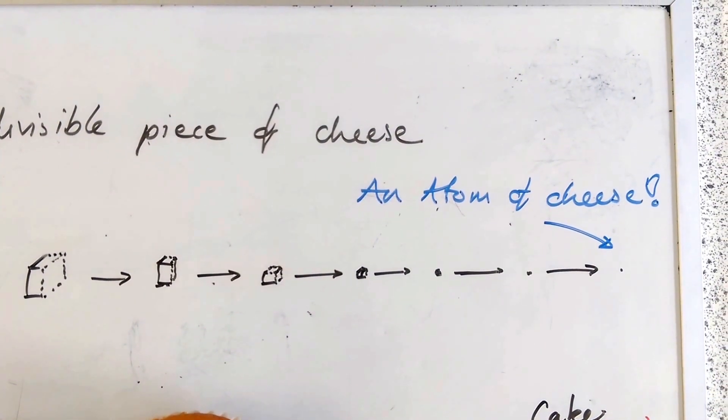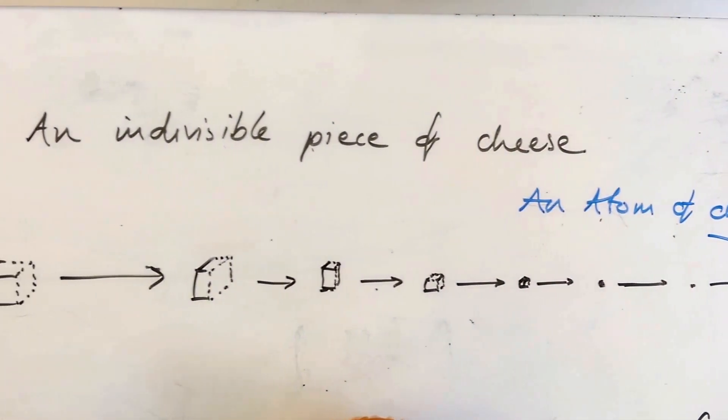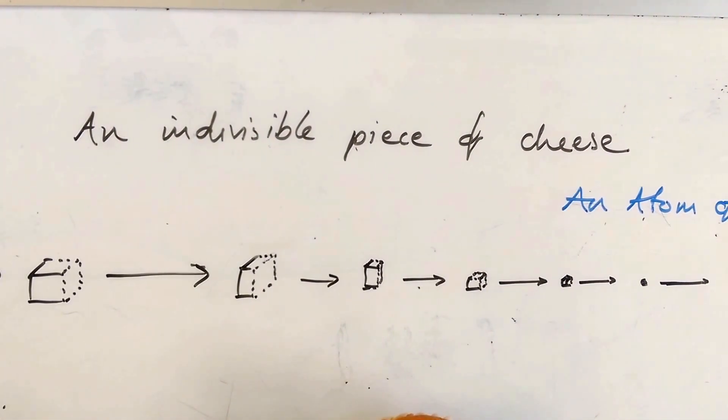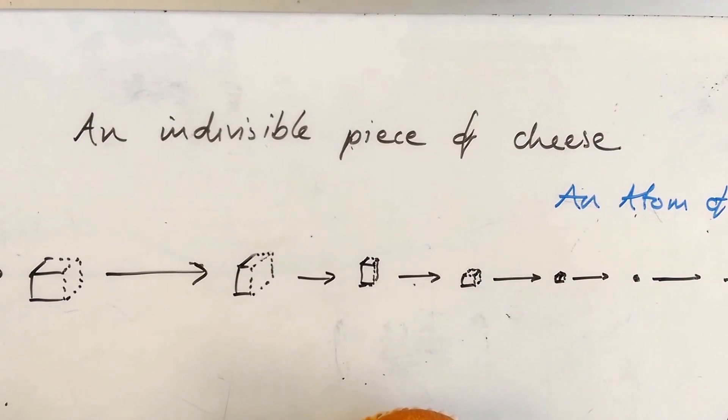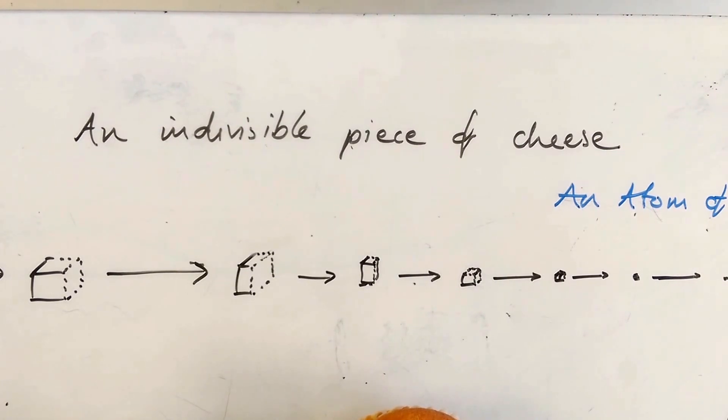That is an atom of cheese. An atom comes from the Greek word atmos, which means indivisible. So they have given us the word for something that cannot be cut up, an atom of a substance.